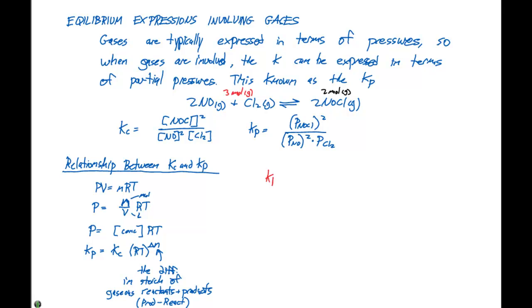The Kp is going to equal the Kc times the quantity RT to the delta N. In this particular case, we need to take products minus reactants, so we're going to have our delta N that we can write for this. Our Kp is going to equal Kc times RT to the 2 minus 3 or to the minus 1 power.